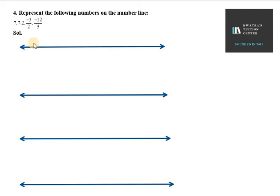Hello everyone, let's start with question number 4. It says represent the following numbers on the number line. So first one is 7. We have to make 7. So to make 7, there is no new thing.